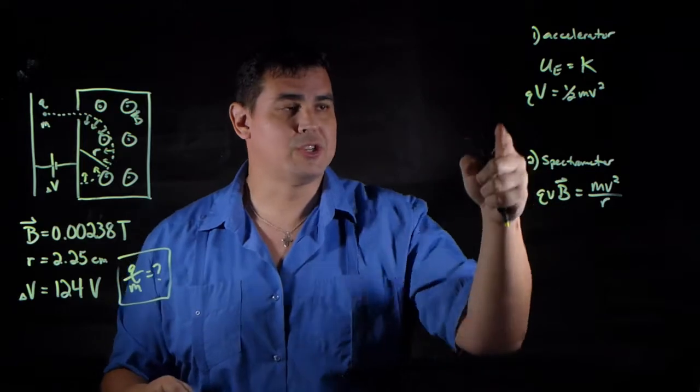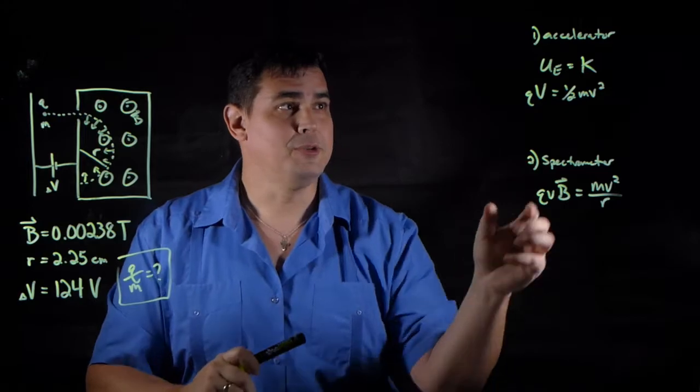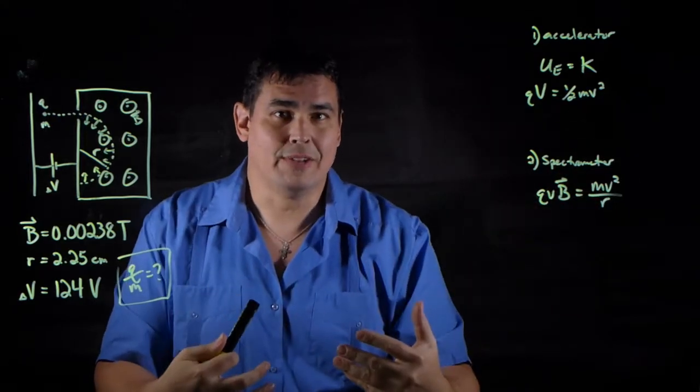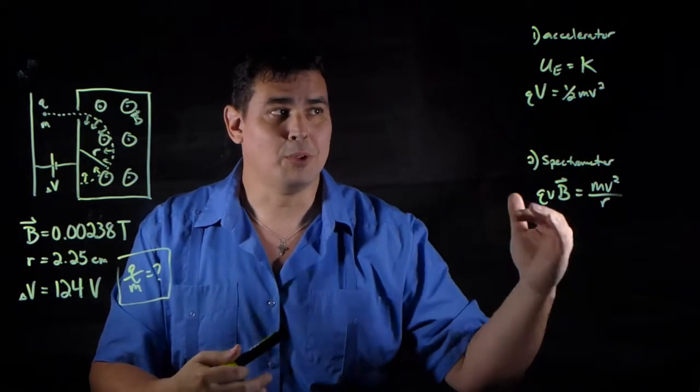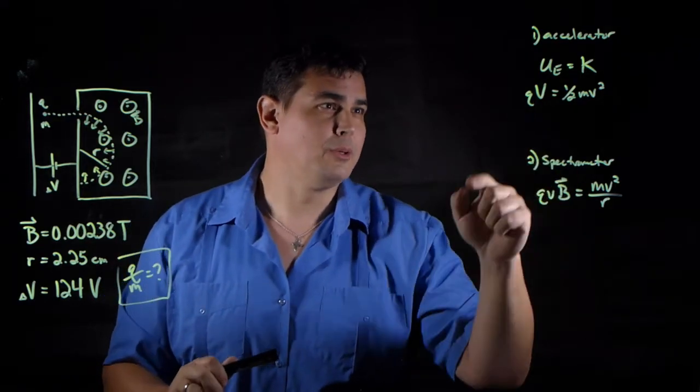I have two equations now, so I need to figure out a way to get charge over mass ratio. These both have velocity, and I don't know the velocity. So I can solve both of these equations for v and then see where I can go from there, because I know what the voltage is.